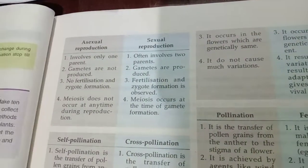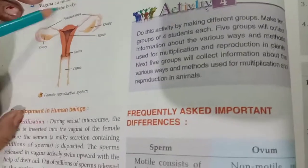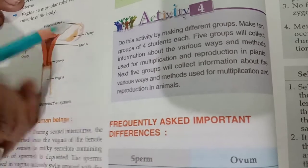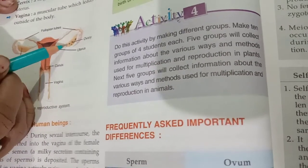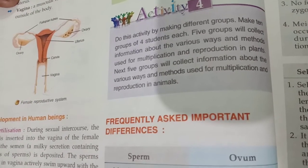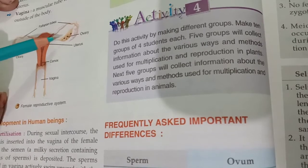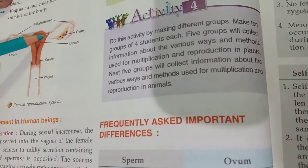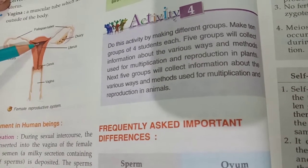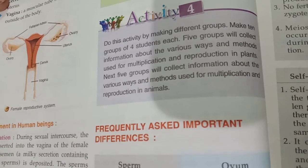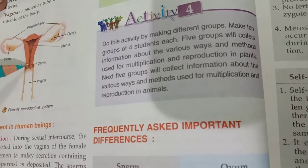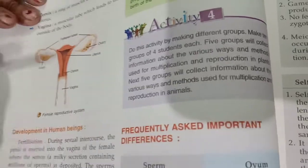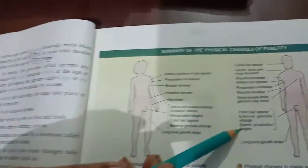The ovaries produce eggs which are already present at the time of birth. There are about 450 eggs, and they start maturing one by one. When they become mature, they are transported through the oviduct into the uterus. When there is no male gamete to fertilize it, the egg ruptures. When the blood and tissues break down, there is onset of bleeding, which is called menstruation.